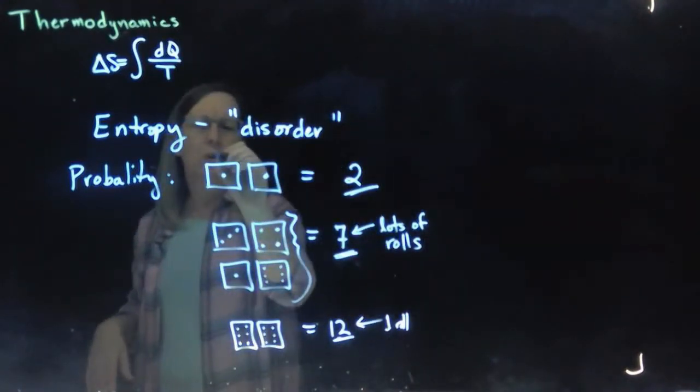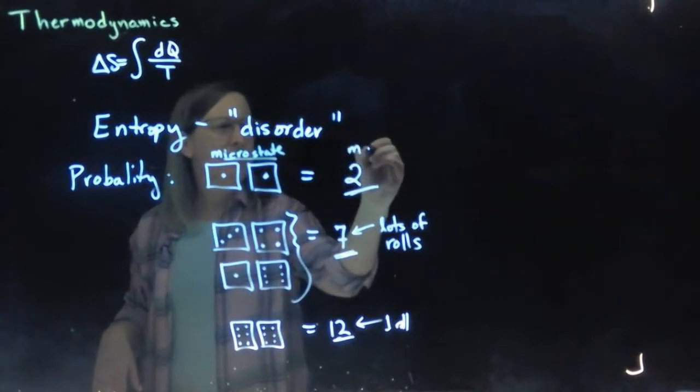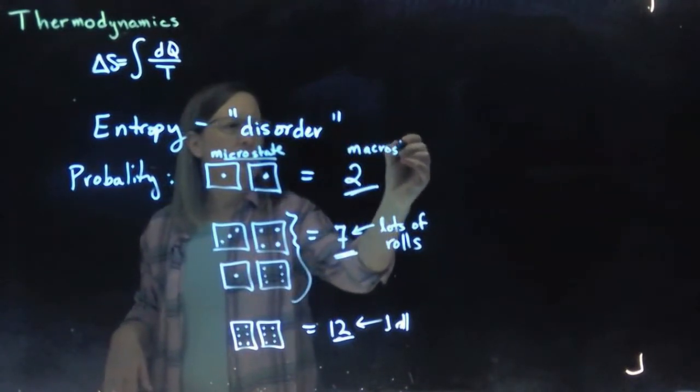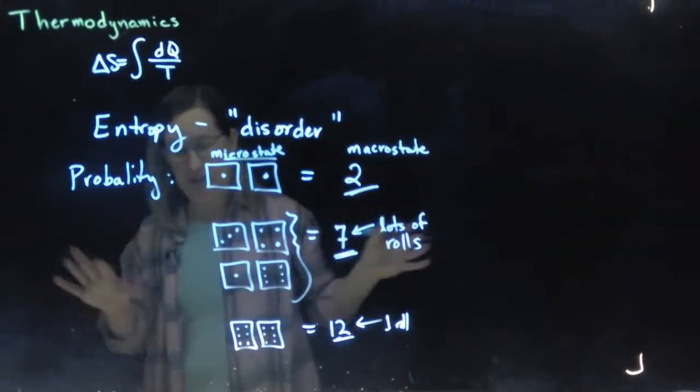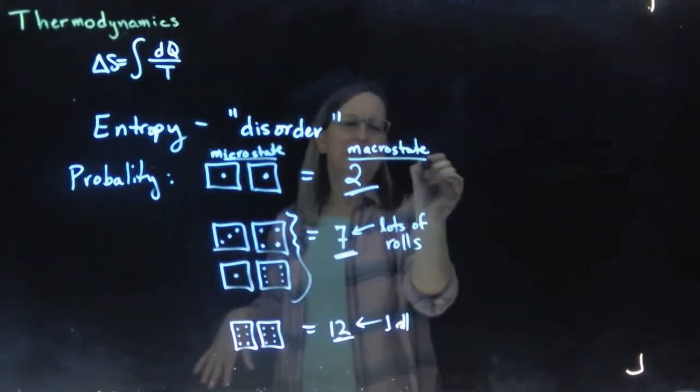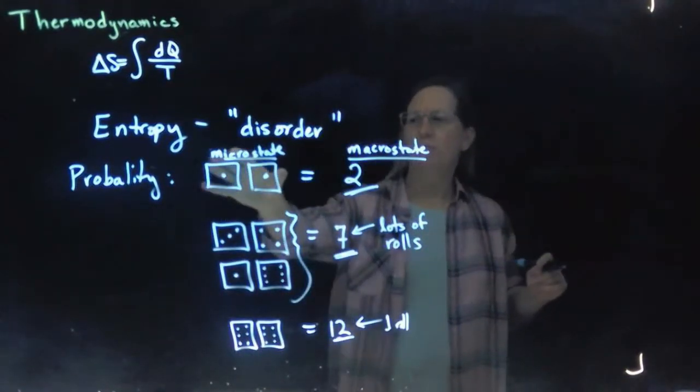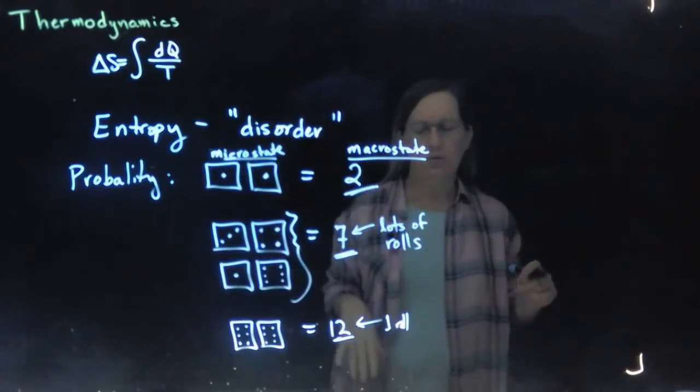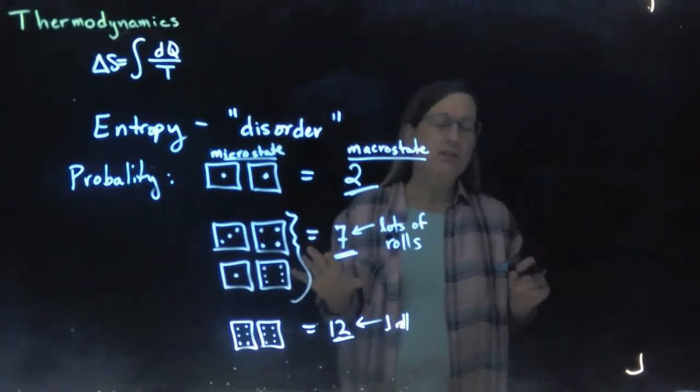This is what we would call a microstate. This is the particular. And this is an example of a macrostate. Now, this is not particularly useful when we're talking about melting blocks of ice or something like that. But this gives us the idea here of a microstate versus a macrostate. And we can extend it past two dice to get at this order disorder.